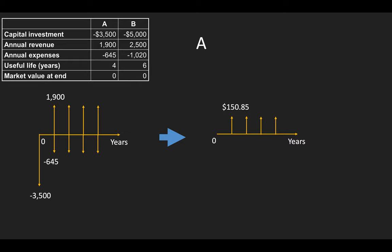I'll give you a few minutes to calculate the annuity. The result is $150.85. Based on this cash flow, if we apply the repeatability assumption — that this project goes forward indefinitely — then $150.85 is the annuity we can use to compare.